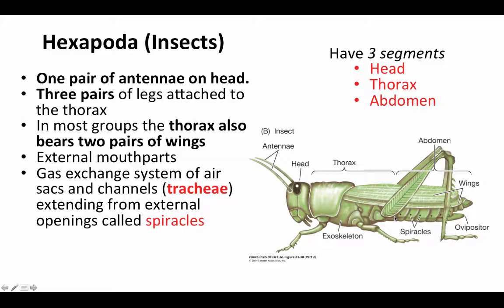Now let's take a look at insects. Insects have their segments organized into three super segments: the head, which doesn't really show the underlying segmentation; the thorax, where you can still see some version of the segmentation in the form of the legs; and then the abdomen, which has more obvious segmentation. They have one pair of antennae on the head.